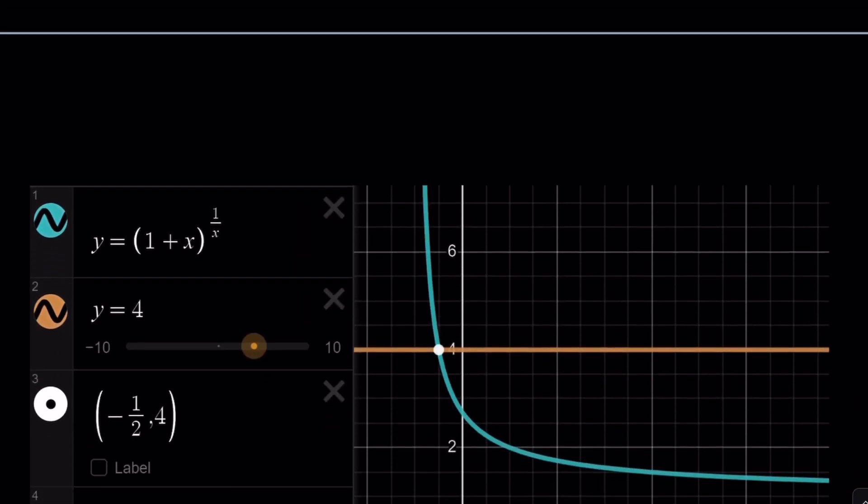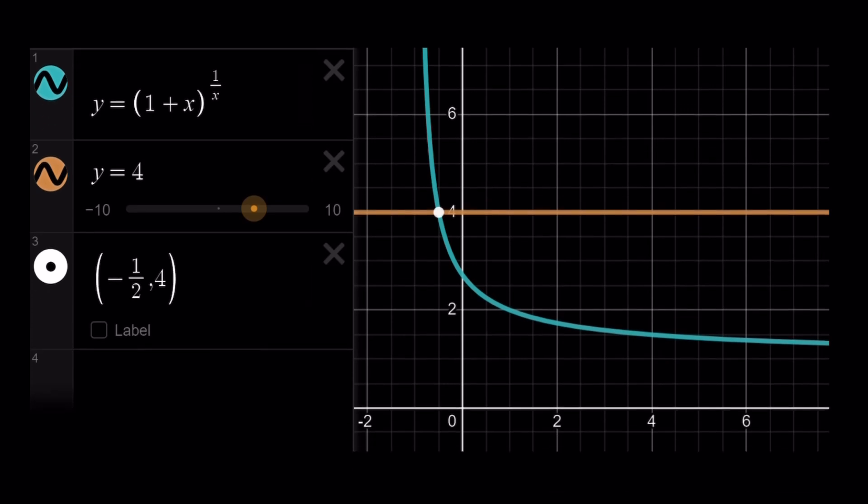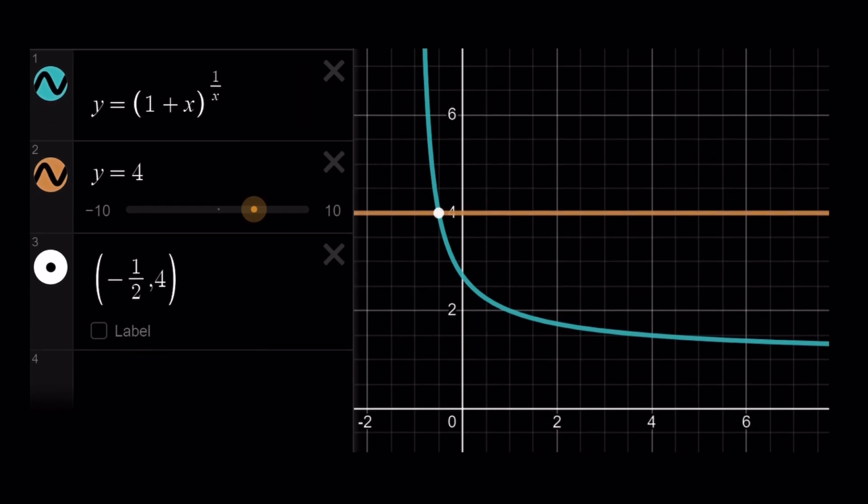And as you can see, the graph of (1 + x) to the power 1 over x is a decreasing function. You can also look at the limit as x approaches infinity, as x approaches negative infinity, if there are any asymptotes. What happened at 0? What happens at 0? You should definitely have an open dot. And as you can see, negative 1/2 is the only solution for x. And this brings us to the end of this video.